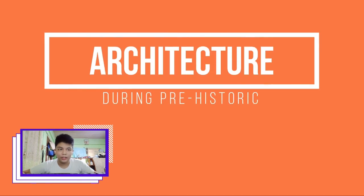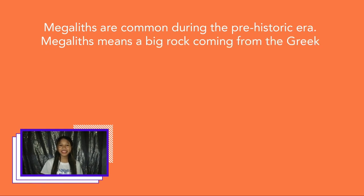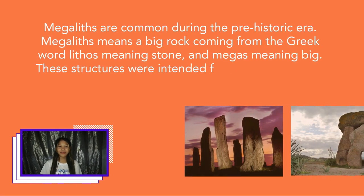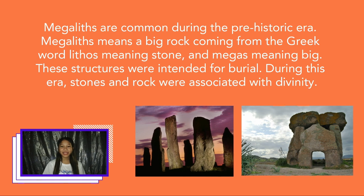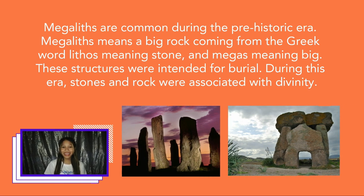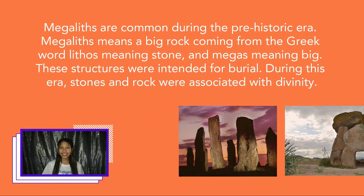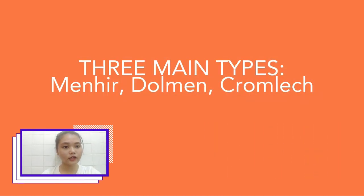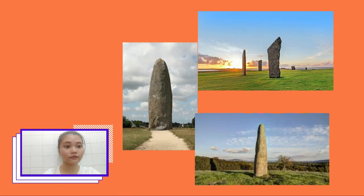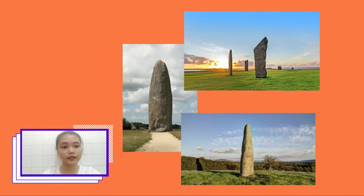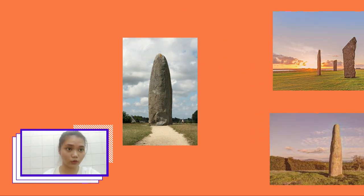Now, all about architecture. Megaliths are common during the prehistoric era. Megaliths means a big rock, coming from the Greek word lithos, meaning stone, and megas, meaning big. These structures were intended for burial. During this era, stones and rocks were associated with divinity. The three main types of megalith stones are menhir, dolmens, and cromlech. Menhir is a huge stone standing vertically on the ground, usually standing in the middle of a field or arranged in rows.